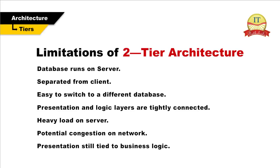Limitations of two-tier architecture: The database runs on the server, separated from the client, making it easy to switch to a different database. However, the presentation and logic layers are tightly connected, placing a heavy load on the server with potential congestion on the network. The presentation is still tied to business logic.